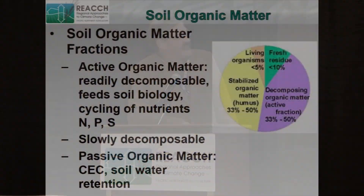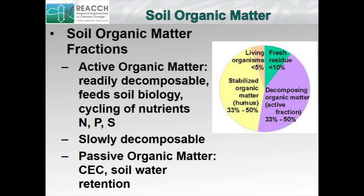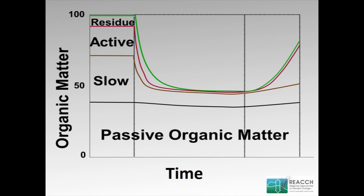So we're really interested in that bank, if you will, of active soil organic matter. There's a slowly decomposable pool that turns over a little bit more slowly, and then there's this passive organic matter that probably has more of a function from the standpoint of cation exchange capacity and soil water retention. You can see a pie chart diagram of what some of those fractions are in organic matter. Here's a quick history of what happened to many of our agricultural systems over time from the standpoint of these different pools.